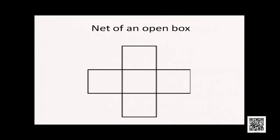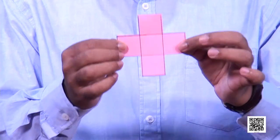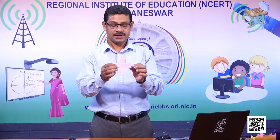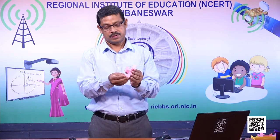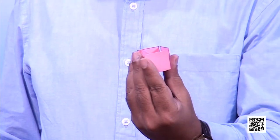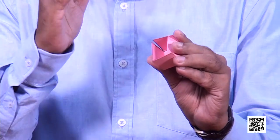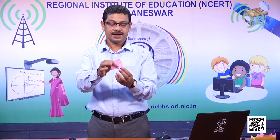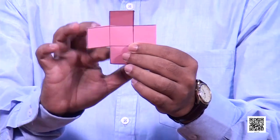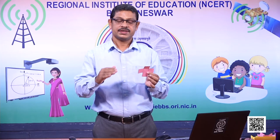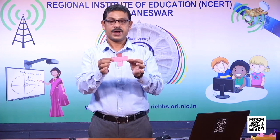Now, this is the net of an open box. Earlier we discussed the net of a cube. Let me fold it — whether I am getting an open box or not. You see, here I am getting an open box. It is also cube-shaped, just it is open. How many faces are here? One, two, three, four, five faces. In case of a closed cuboid there are six faces; in case of an open box there are five faces.